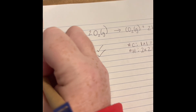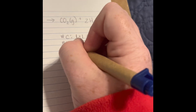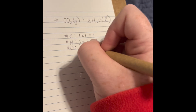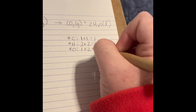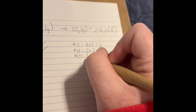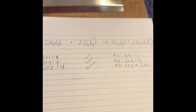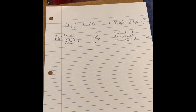Now for oxygen: I have two molecules of oxygen with two atoms, giving four. Over here, one molecule of CO2 with two oxygen atoms gives two, plus two molecules of water with one oxygen atom each gives two more — two plus two equals four. So yes, they all balance. That's your check and balance for determining if an equation is balanced.